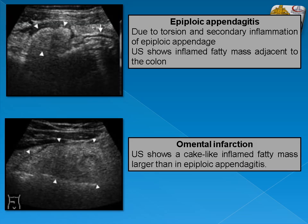In epiploic appendagitis, due to torsion and secondary inflammation of the epiploic appendage, ultrasound shows an inflamed fatty mass adjacent to the colon with minimal surrounding fluid, but the appendix with thickened wall and other appendicitis findings will not be seen. In omental infarction, ultrasound shows an acutely inflamed fatty mass larger than in epiploic appendagitis, but again the other findings of acute appendicitis are absent.